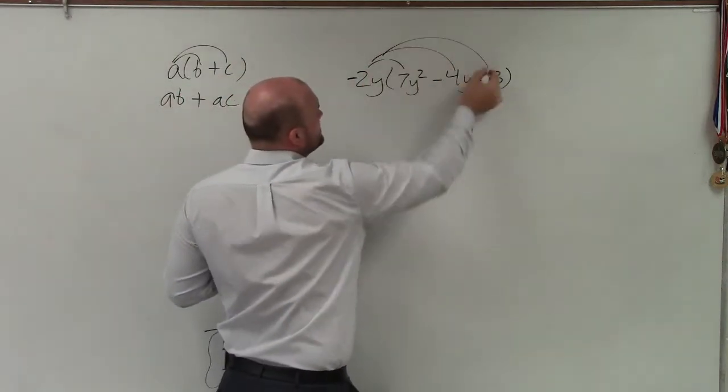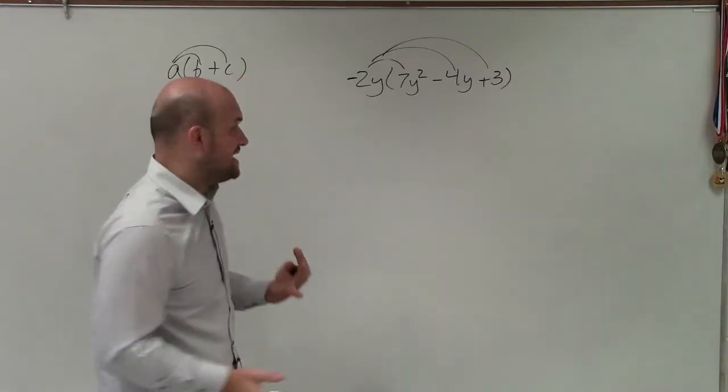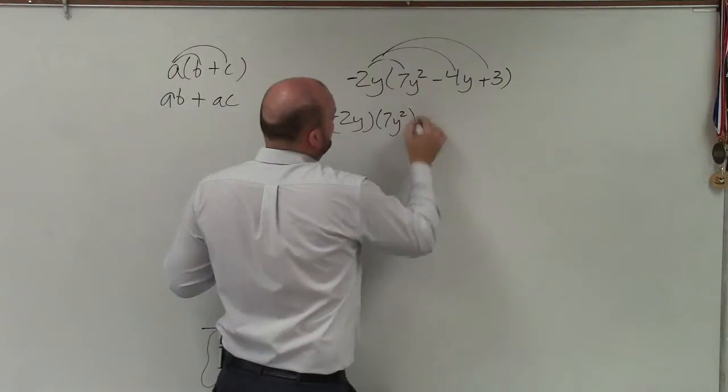So in this case, all I'm simply doing is multiplying that throughout. Now, to avoid me making so many mistakes, a lot of times what I like to do is just rewrite the product for each one.